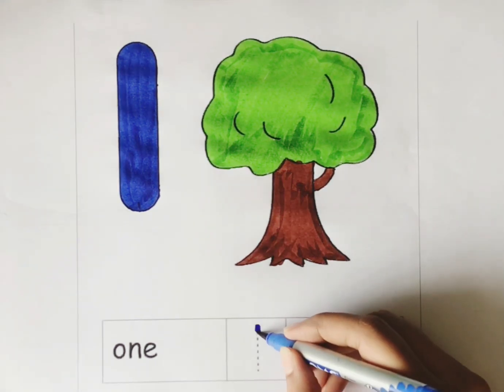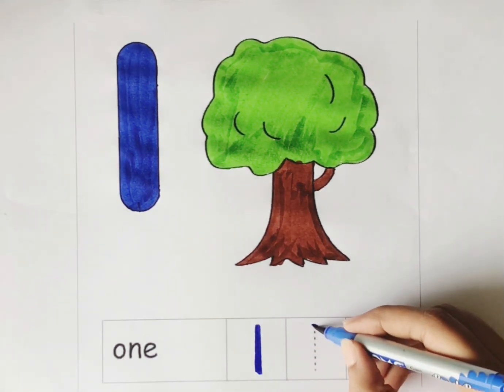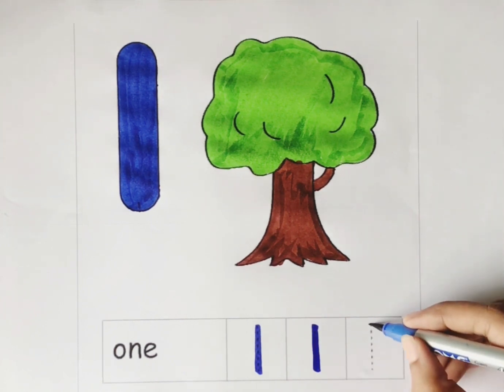Let's trace the number 1. 1, 1 — standing line.